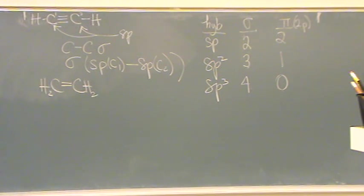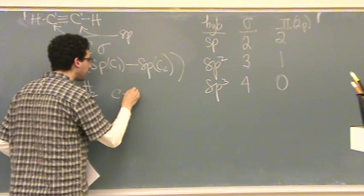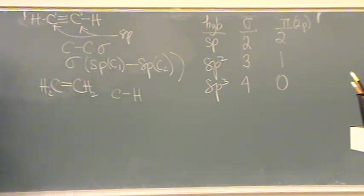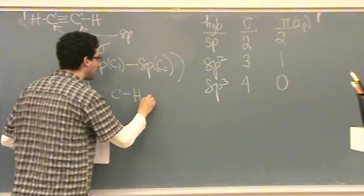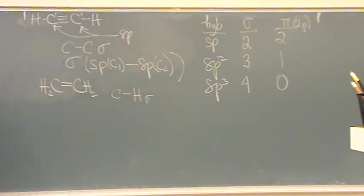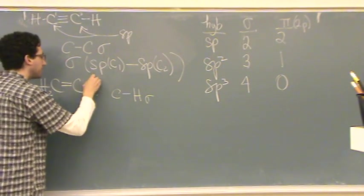This is ethene. You don't need to know the name of it. It says, between the carbon-hydrogen bond, the carbon-hydrogen sigma bond, what hybrid orbitals overlap? Let me kind of draw it out a little bit for you.